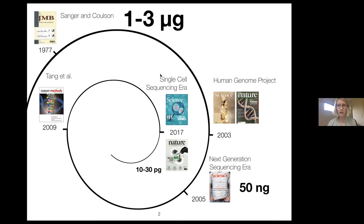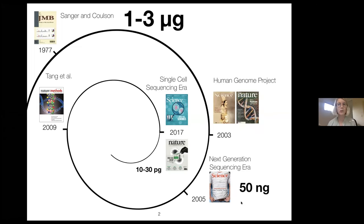Since then, there has been quite a bit of development. In 2005, there was the introduction of next generation sequencing, which already needed significantly less material — from thousands of cells. Things really started to change in 2009, when Tang et al. came out with the first protocol for single cell sequencing, though they were only able to do this for nine cells. We're in a completely different era now. By 2017, when single cell sequencing was declared the technology of the year, we were already able to do this for millions of cells.